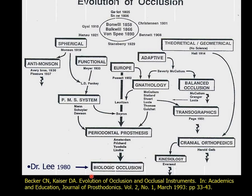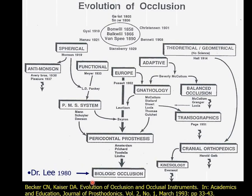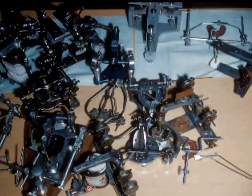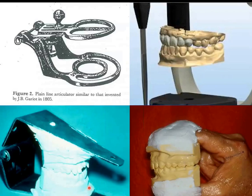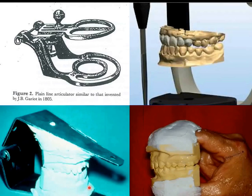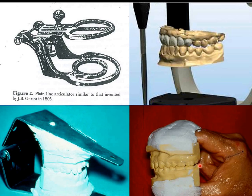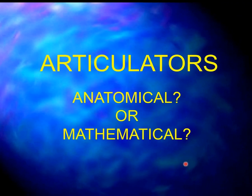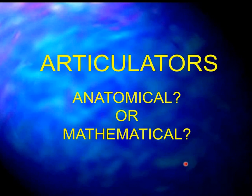Articulators — are they anatomical or are they mathematical? If I superimpose a mandible onto a lower frame of an articulator, it's hard to understand that a steel ball bearing is supposed to anatomically represent something that looks like a football. The concept breaks down to simple geometry. Two points in space define a straight line — it could be infinitely small or large in distance. That's what we're doing with these two steel ball bearings: two points in space simulating a straight line, or the hinge axis of the mandible.